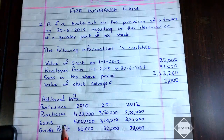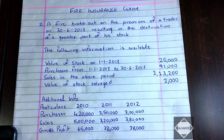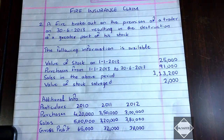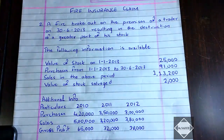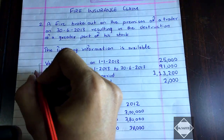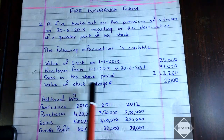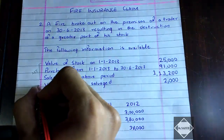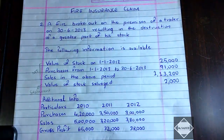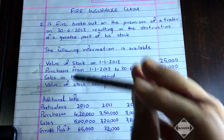Additional information for three previous years — 2010, 2011, and 2012 — is given, including purchases, sales, and gross profit. Since the gross profit of previous years is already given, we don't need to prepare a trading account. We will directly prepare the memorandum trading account using all three years, and the salvaged stock value will go into the statement of fire insurance claim.